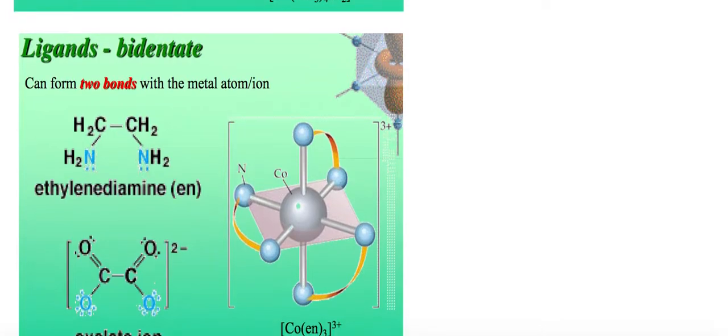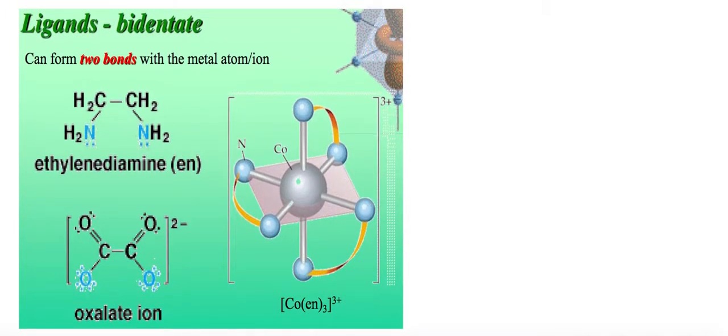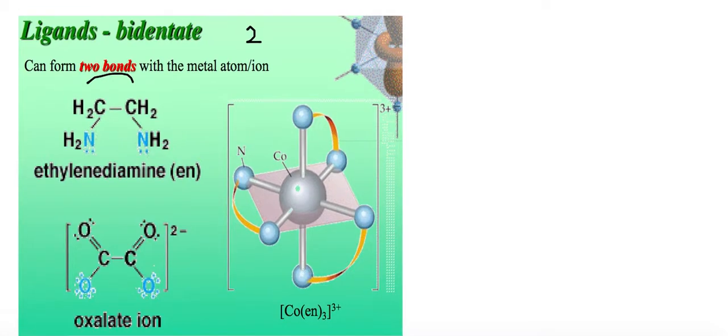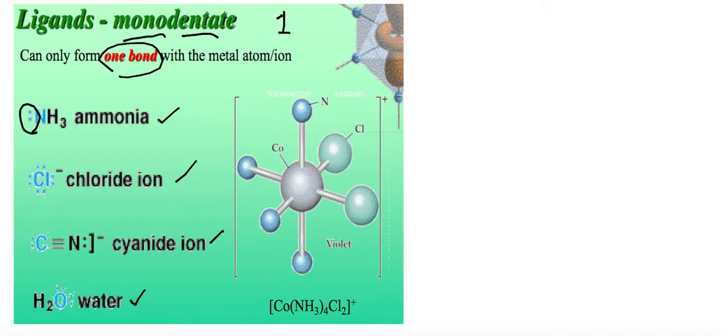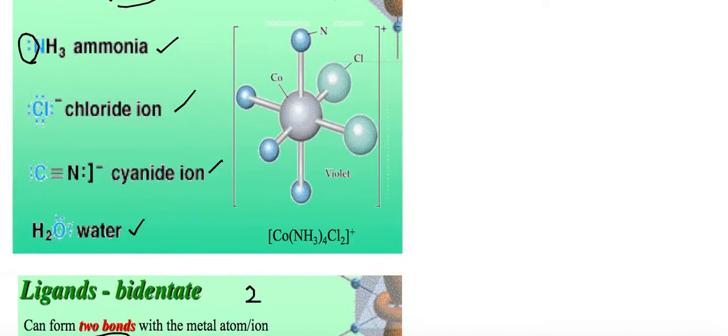Moving on, bidentate. I guess by now you should be able to guess. Bidentate refers to the formation of two bonds with metal atom or ion. This is an example: ethyl diamine or oxalate ion. Not too popular as examples. Our syllabus is more on the monodentate which is the most common form of ligands.